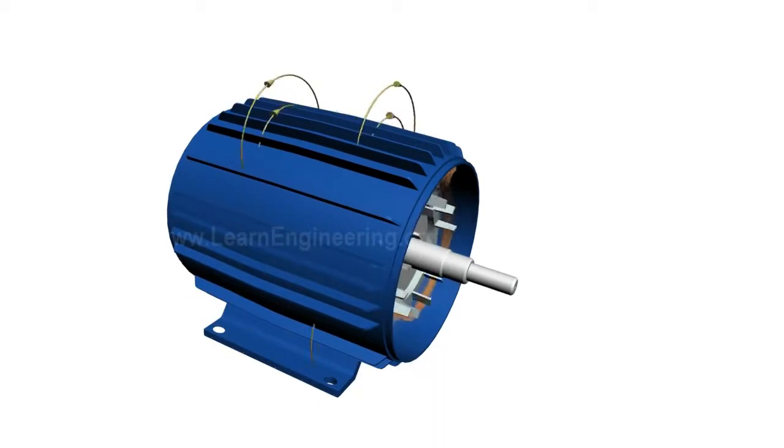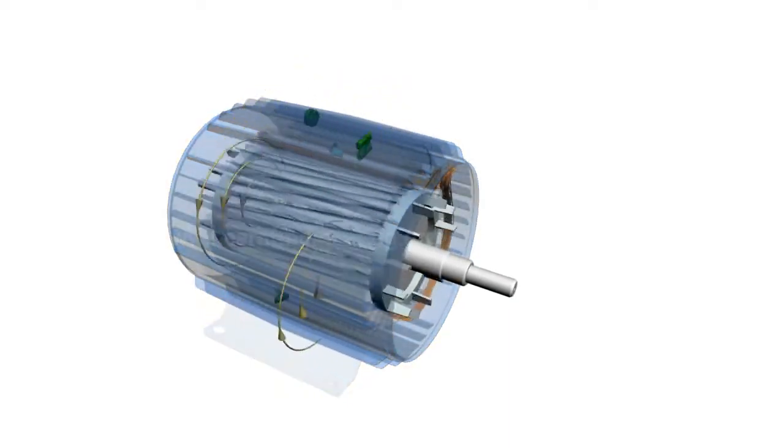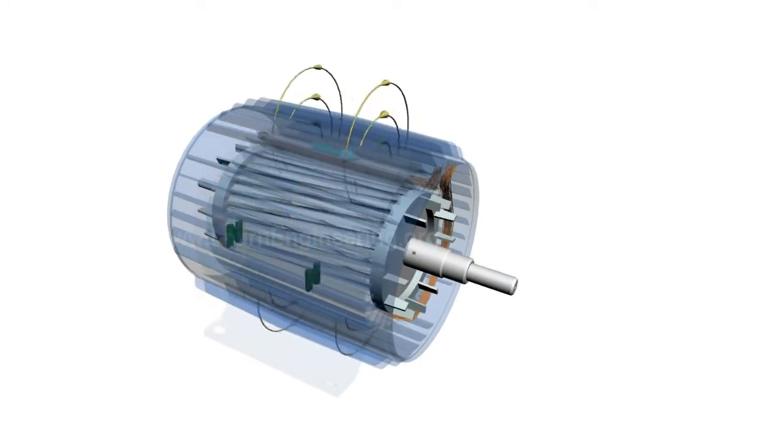But one big problem remains: how to provide such an initial rotation? Nikola Tesla, a famous Yugoslav inventor, suggested one ingenious solution to this problem. If we can cancel any of the rotating fields, we will be able to start the motor.